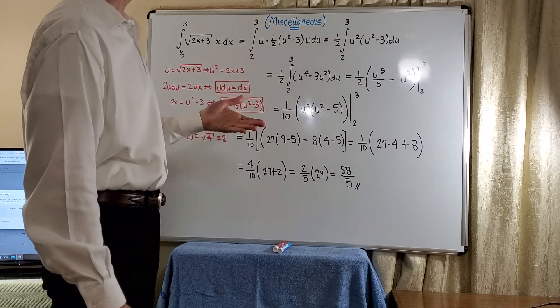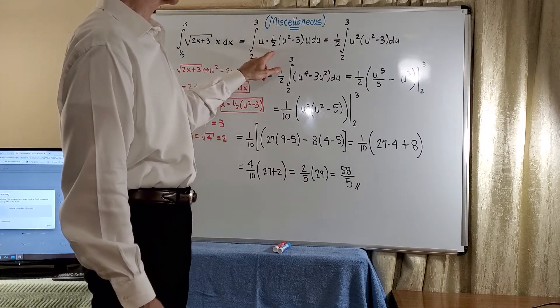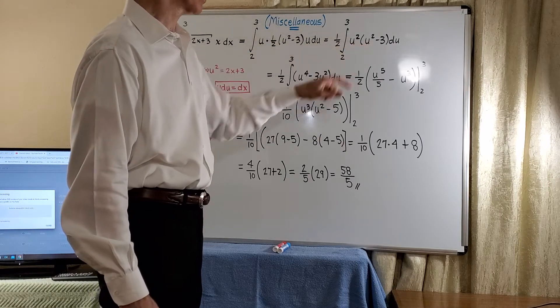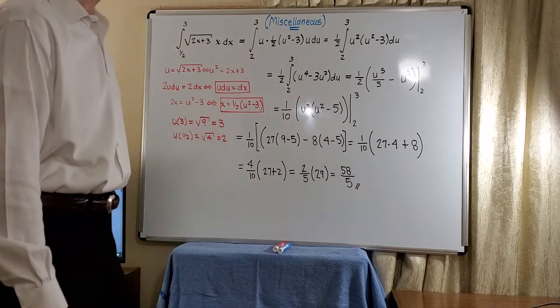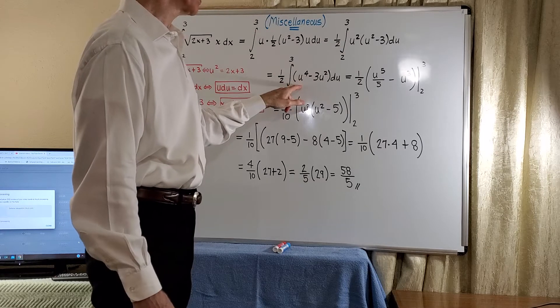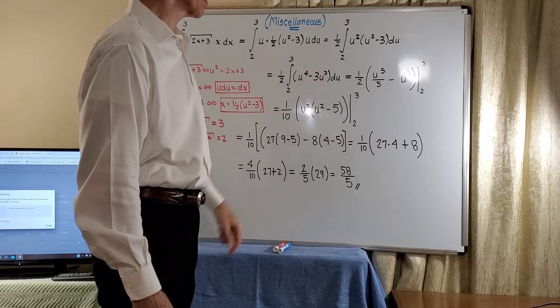So just to clean this up a little bit, we'll go ahead and extract the 1/2 and multiply the u's to give a u squared times the quantity u squared minus 3. And then, this is the power rule if we go ahead and distribute. So we get u to the 4th minus 3u squared.